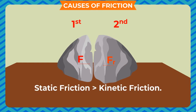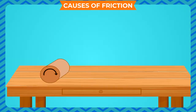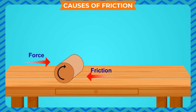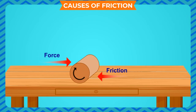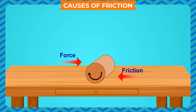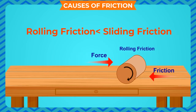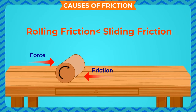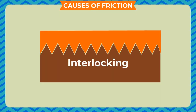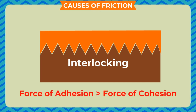Static friction is greater than kinetic friction. When an object with rollers or wheels is pushed, it becomes easier, which implies that rolling friction is less than sliding friction, which is less than static friction. Friction depends on the interlocking of two surfaces. If the force of adhesion is greater than the force of cohesion, the friction is more, and vice versa.